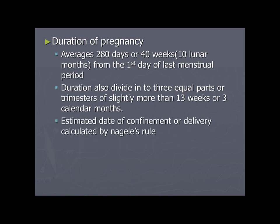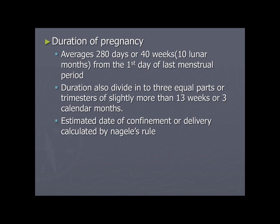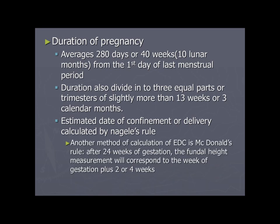The estimated date of confinement (EDC) or estimated date of delivery (EDD) can be calculated by Naegele's rule: nine months plus seven days from the first day of the last menstrual period. Another method is McDonald's rule, which can be done only after 24 weeks of gestation — the fundal height measurement will correspond to the week of gestation plus or minus two weeks.